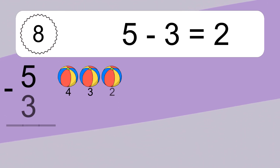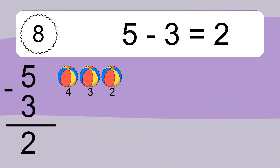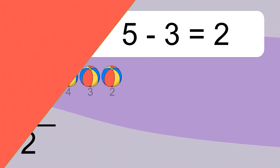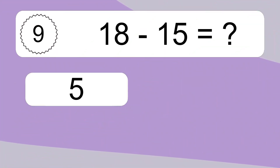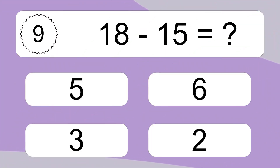5 minus 3 equals what? 5 minus 3 equals 2. Let's count it. 4, 3, 2.